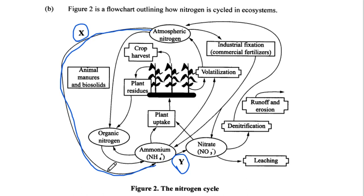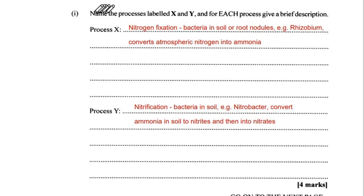Y shows the conversion of ammonium to nitrate, done through nitrifying bacteria — for example, Nitrobacter. This is called nitrification. Process X: nitrogen fixation — bacteria in the soil or root nodules (e.g., Rhizobium) convert atmospheric nitrogen into ammonia. Process Y: nitrification — bacteria in the soil (e.g., Nitrobacter) convert ammonia in soil to nitrites and then into nitrates. Name each process and give a basic description for maximum marks.